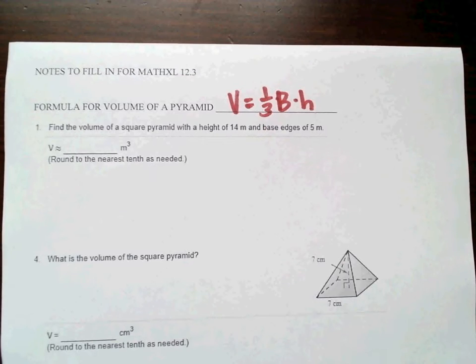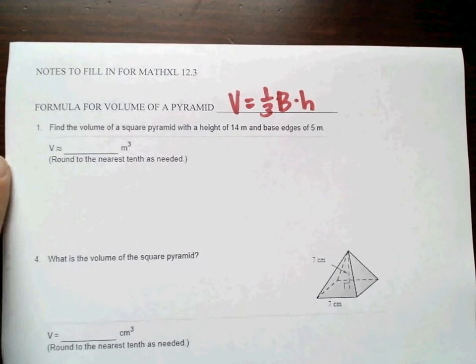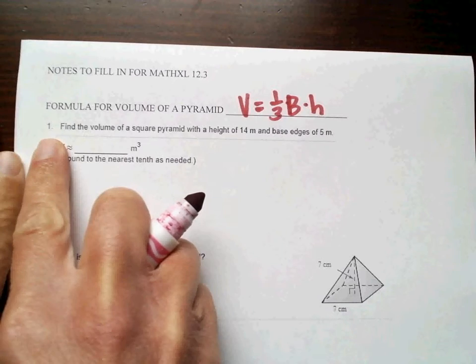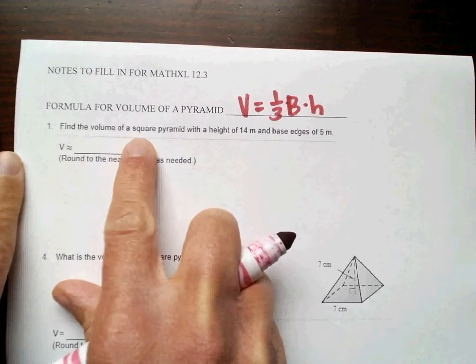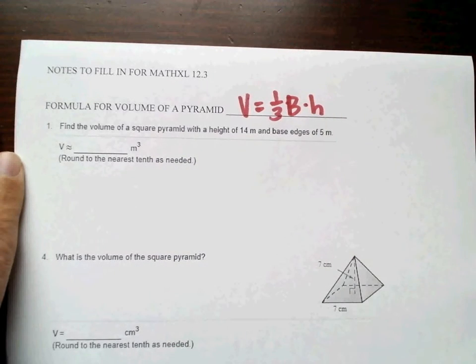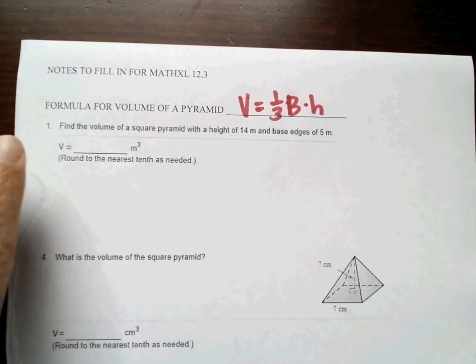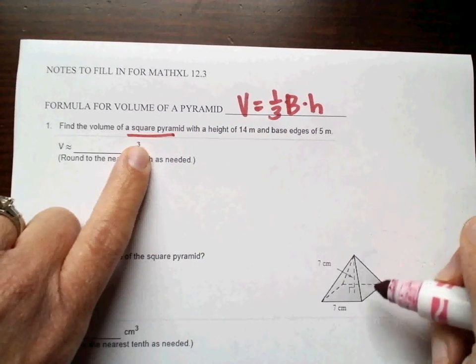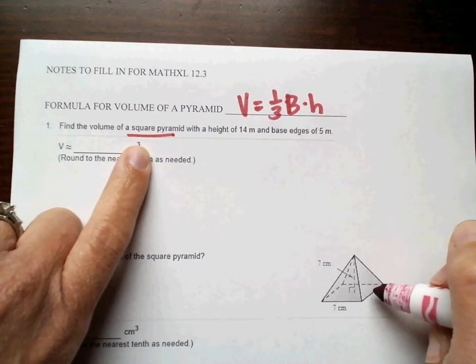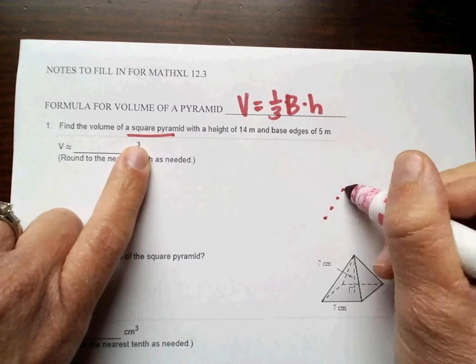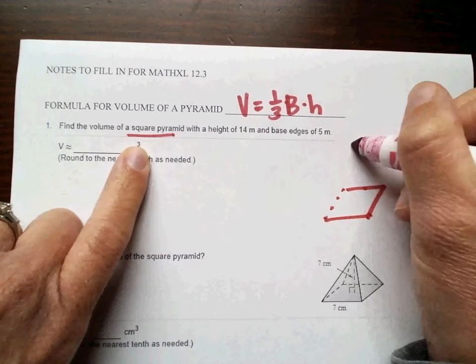I have a few examples here. This is similar to number 1 on the Math Excel. Find the volume of a square pyramid, the height is 14, and the base edges are 5. So there isn't a picture here, but we want to picture a square pyramid. This picture below is actually the next problem, but we can use it to help us picture what we got here.